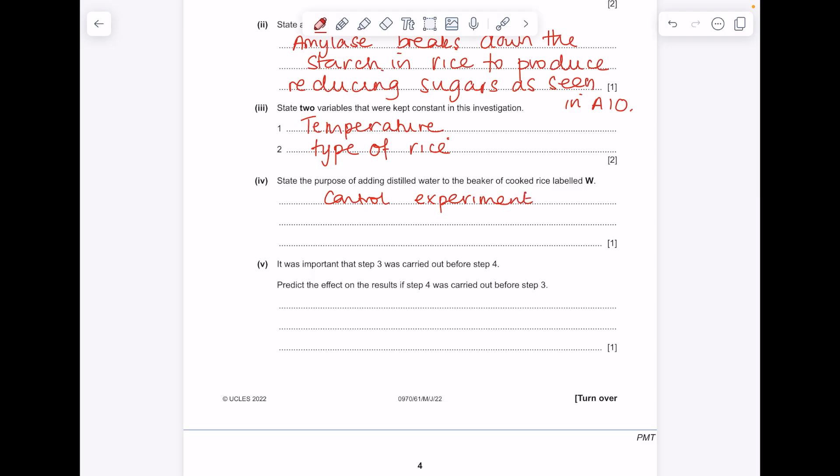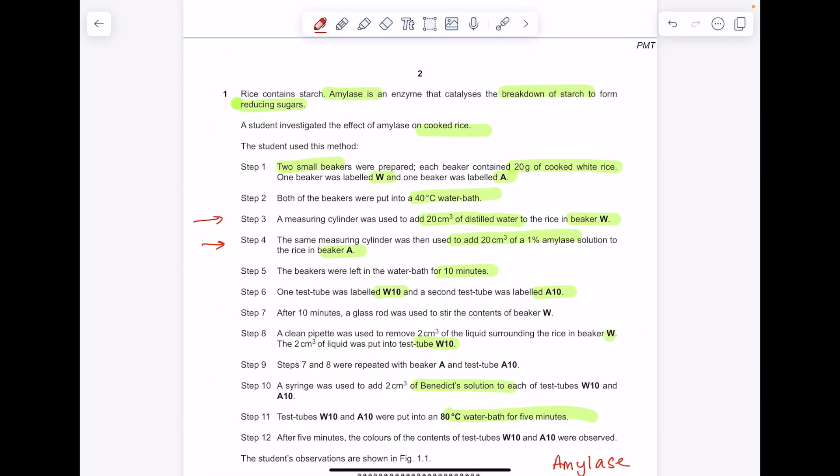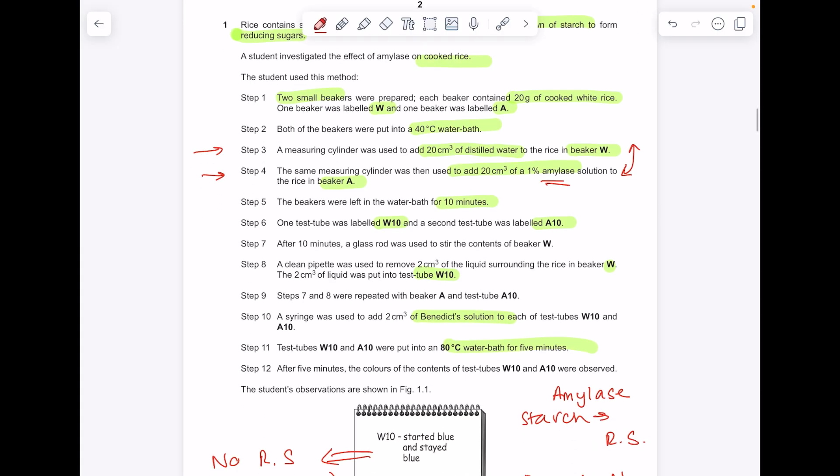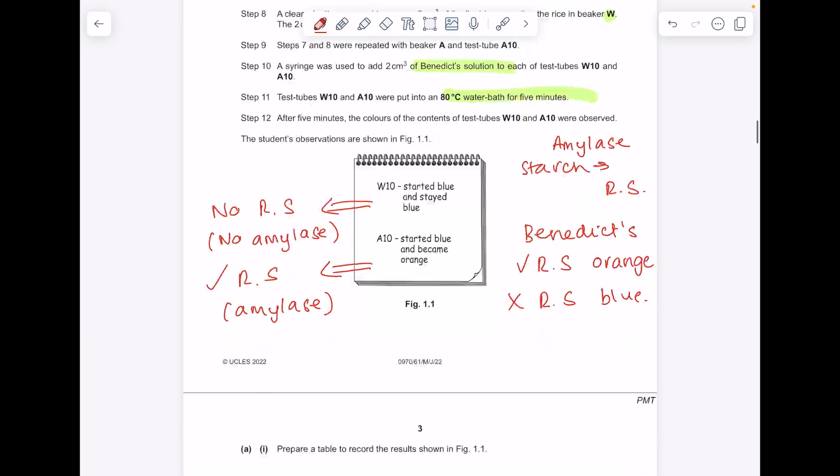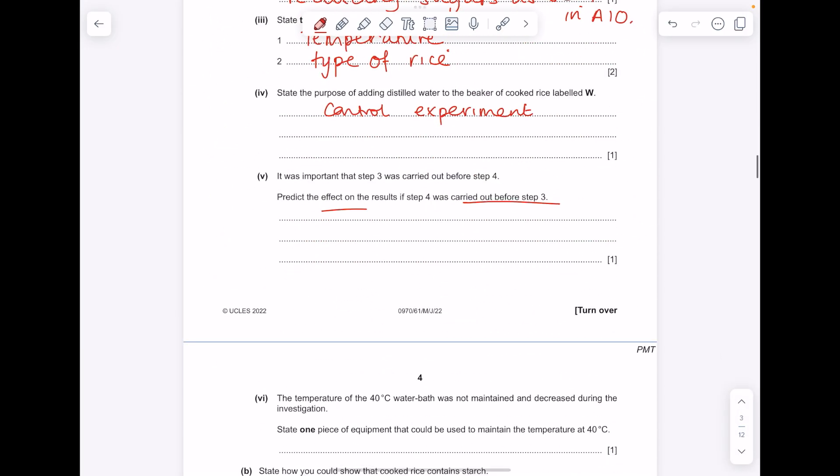It was important that step 3 was carried out before step 4. Predict the effect on the results if step 4 was carried out before step 3. Well, if you reverse these steps, you'd have amylase in beaker W, so then you'd have that starch in the rice in beaker W being broken down into reducing sugars, so you'd see an orange color there also. So W10 would also turn orange with Benedict's. Make sure you say what you'd see in those results.